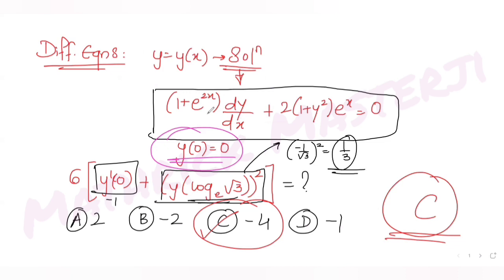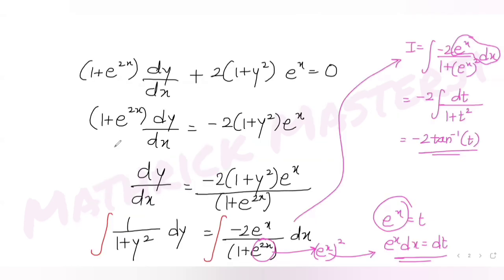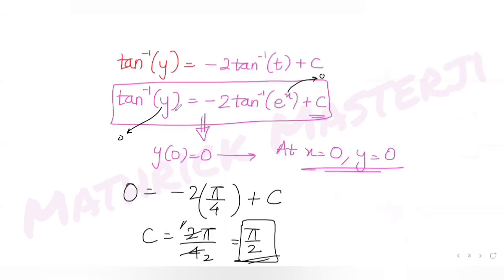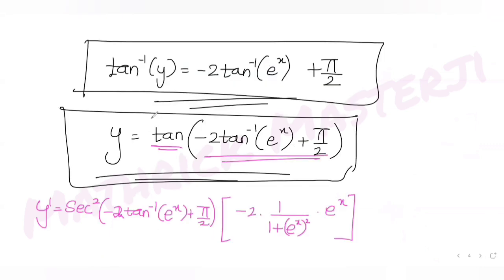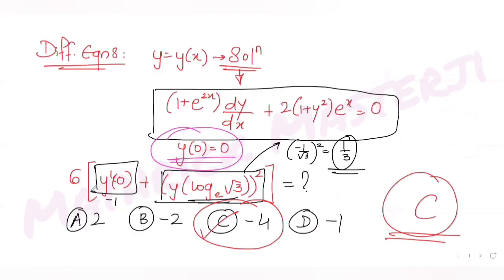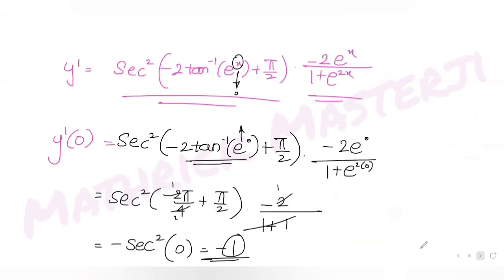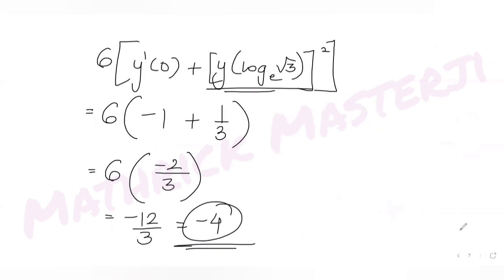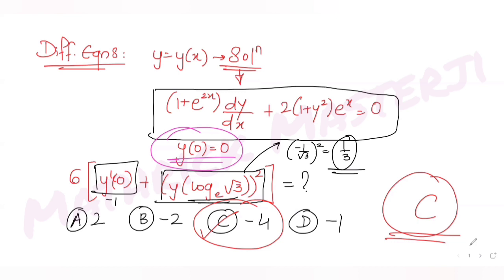To summarize: we separated the variables (y on one side, x on the other), integrated both sides, found the constant C using y(0) = 0, then expressed y explicitly. From there we computed y'(0) = -1 and [y(log√3)]² = 1/3, giving a final answer of -4, which is option C.